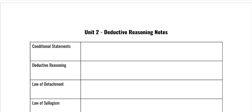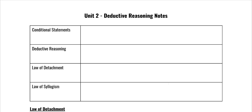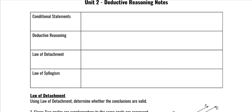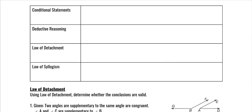Today we're going to go over deductive reasoning. First, a conditional statement is an if-then statement — it always starts with 'if' and 'then' is in the middle. We say it is 'p then q,' where p is the hypothesis and q is the conclusion.